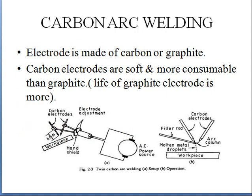In carbon arc welding, the electrode is made of carbon or graphite. These carbon electrodes are soft and more consumable. The workpiece is present along with a filler rod and carbon electrodes. The arc produced between the two electrodes melts the filler material, which then joins both metals. For thinner materials, a filler rod is not needed — the carbon electrodes can produce the arc directly, and due to ionization of gas, both metals will join.